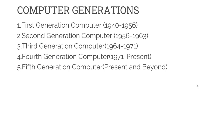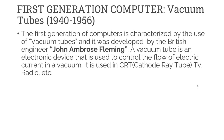There are five generations of computers. The first generation evolved from 1940 to 1956. The second generation spanned 1956 to 1963. The third generation covered 1964 to 1971. The fourth generation ran from 1971 to the present. And the fifth generation is what we have today and in the coming future. We will discuss each of these generations one by one.